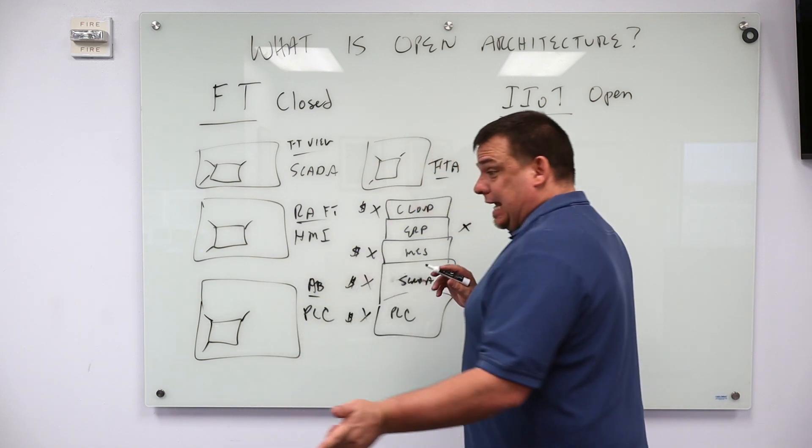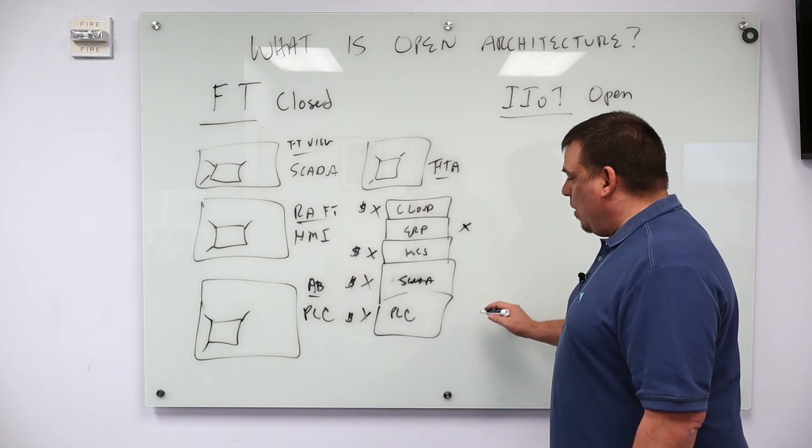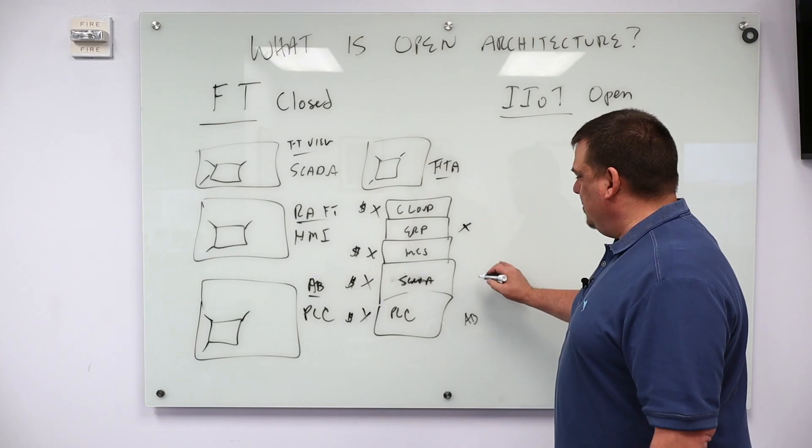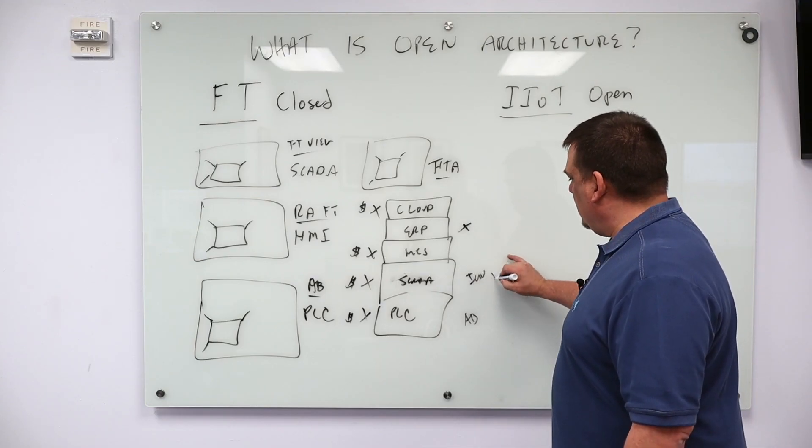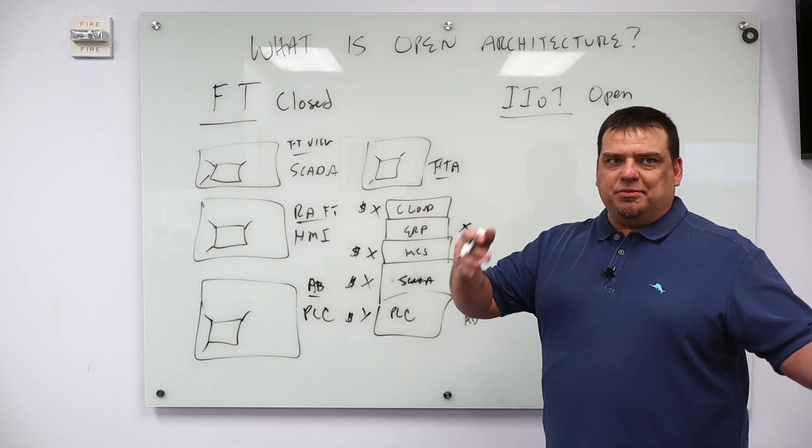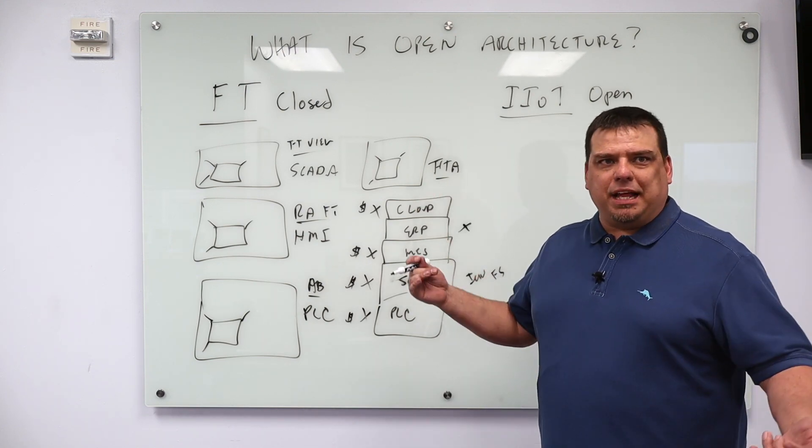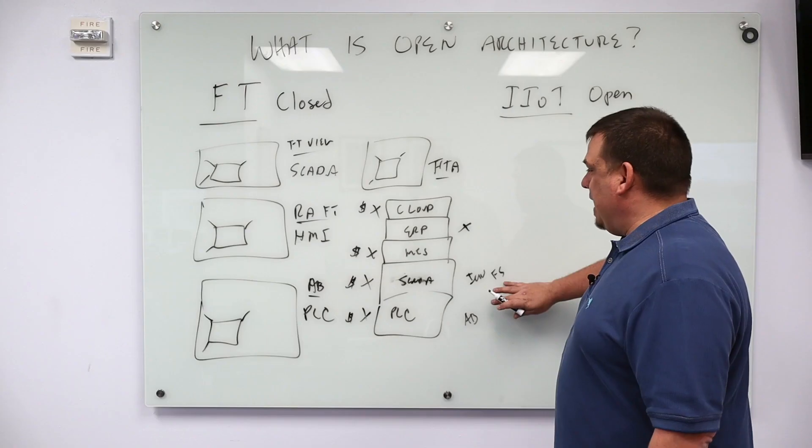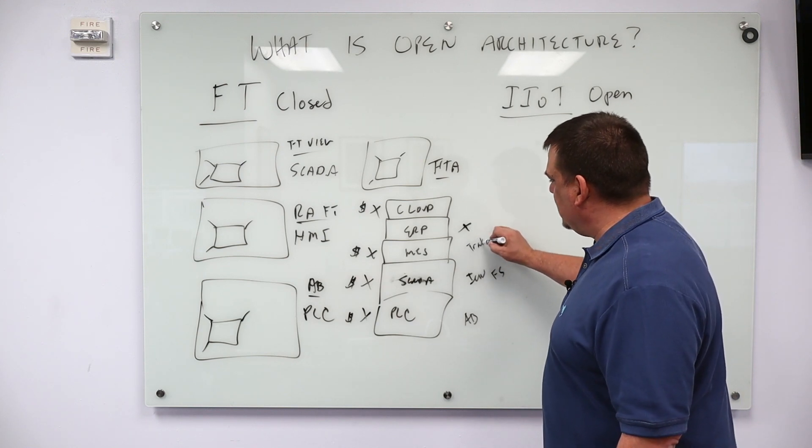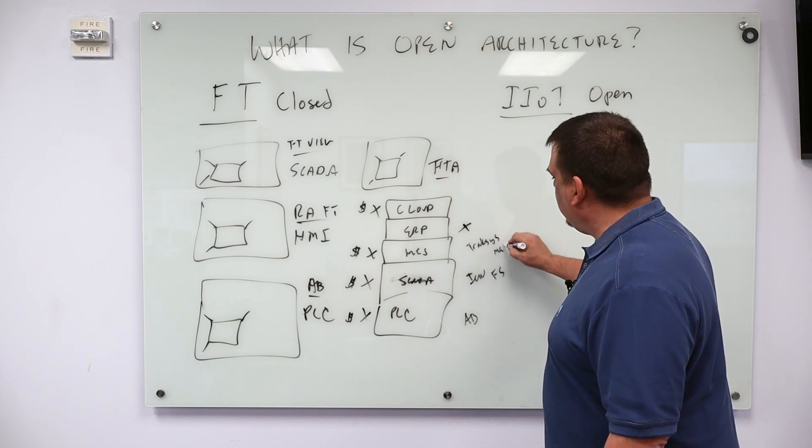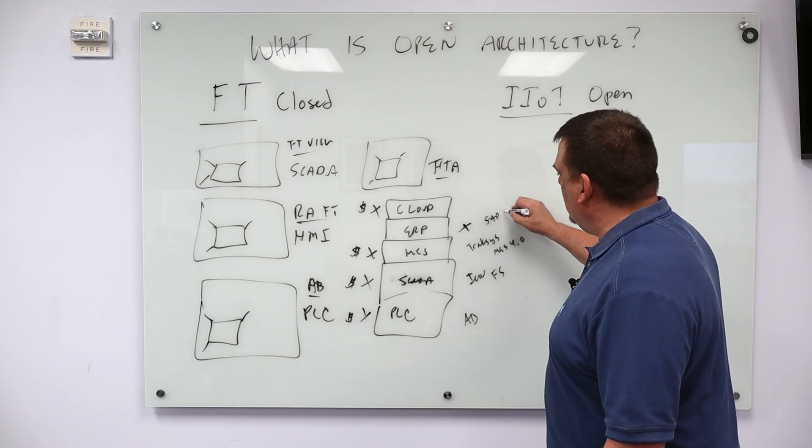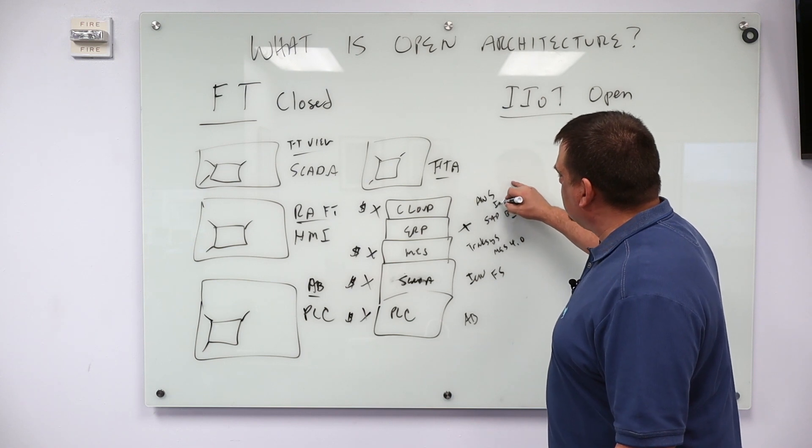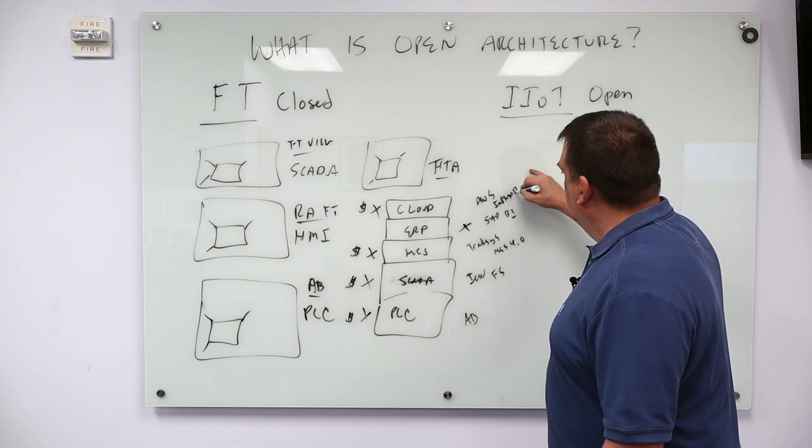In an open architecture, I want to be able to use Allen Bradley PLCs. I want to be able to use Ignition or FactoryStudio or InduSoft, which was voted the number one SCADA platform this year in Controls Engineering. That's complete hogwash, but that's what it was voted. FactoryStudio, MES, we want to use maybe Traxis or MES 4.0. Maybe in ERP, I want to use SAP B1. And in cloud, I want to use AWS or InfluxData or Seeq.